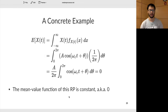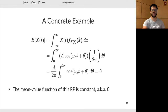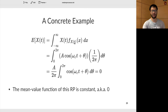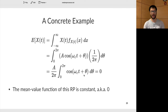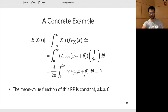To find the mean value function: it's the integral from 0 to 2π of A·cos(ω_c·t + θ) times 1/(2π) dθ. We can bring A/(2π) outside and integrate a cosine over one full period, which gives zero because the positive and negative areas cancel. So the mean value function equals zero — a constant — satisfying the first WSS condition.